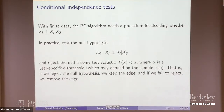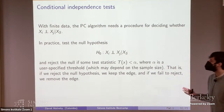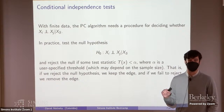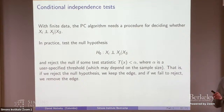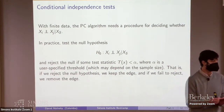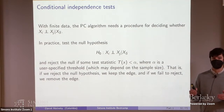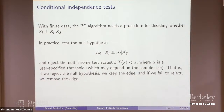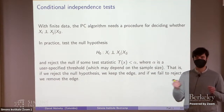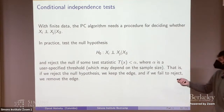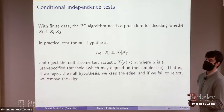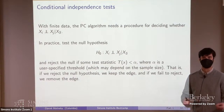It's important to emphasize that in the classic PC, the independence test is formulated so that the null hypothesis is conditional independence. In statistical hypothesis testing, you decide whether to reject the null. So if I observe a test statistic — say the partial correlation — that is very small, I reject the null hypothesis of independence and keep the edge. If I don't reject the null, I accept conditional independence and remove the edge.